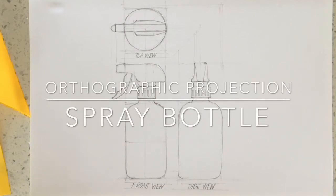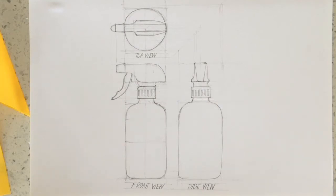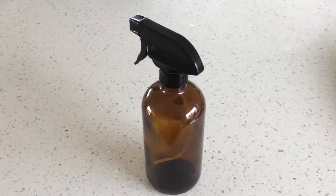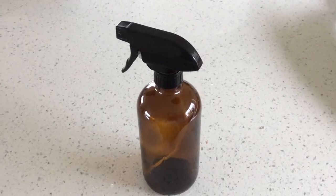In this video I am going to demonstrate how to do an orthographic projection of a spray bottle. We're going to have a top view, a front view and a side view, and this is the bottle that I am going to draw.